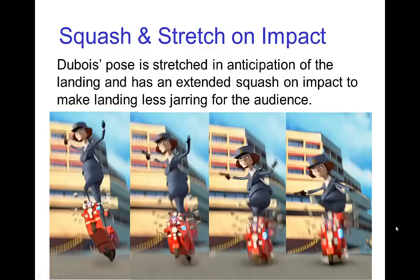Here's an example from a character — you see Dubois jumping and landing. If we examine the squash and stretch she does on the landing, she's stretched out in a pose that anticipates the landing, and this allows an extended squash. The rig is not being deformed significantly; most of the squash and stretch is occurring just from the bending of her knees, much in the same way as Luxo Junior squashes and stretches by hinging joints.